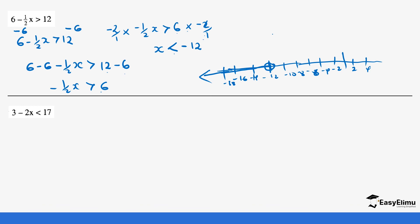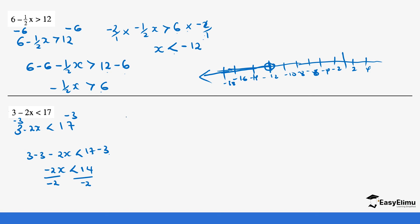Let's look at another example: 3 minus 2x is less than 17. We subtract 3 from each side, giving us 3 minus 3 minus 2x is less than 17 minus 3. This gives us minus 2x is less than 14, because 17 minus 3 is 14. We divide both sides by minus 2. That makes us change the sign, which gives us x greater than minus 7, because 14 divided by 2 is 7. So all our values are going to be greater than negative 7.